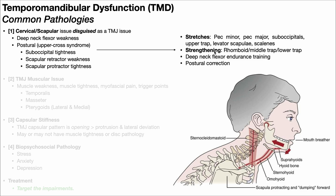Strengthening the muscles that pull the shoulder blades back into retraction — rhomboids, middle traps, and lower traps — is important, as these will be weak in patients with chronic poor posturing. You could also consider strengthening the paraspinals of the thoracic spine; exercises like Superman's are great for this. The deep neck flexor group is also likely weak, so do a deep neck flexor endurance test and if they're weak, perform deep neck flexor endurance training. In general, work on posture — pulling the thoracic spine up and the neck out of protraction into a neutral position. If you treat all these impairments, sometimes the TMJ issue goes away because it really wasn't a primary TMJ issue — it was just creating a secondary TMJ problem due to increased stress on the joint.